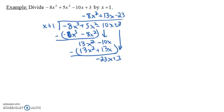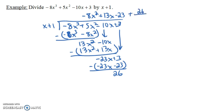13x times x plus 1 is 13x squared plus 13x. When we subtract, we have negative 10x minus 13x, which gives a negative 23x. We bring down the 3. Now we ask what times x gives us minus 23x? It's minus 23. So minus 23 times x plus 1 is minus 23x minus 23. When we subtract, the 23x's go away. We have 3 minus a negative 23, that's 3 plus 23, which gives us 26.